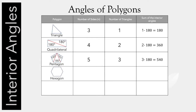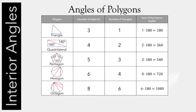Let's try a hexagon. A hexagon has six sides. And if we draw some diagonals, we'll find that we can split the hexagon into four triangles. Four times 180 gives us 720 degrees inside the hexagon. Let's try an octagon. An octagon has eight sides. If we draw some diagonals in the octagon, we can split that into six triangles. Six times 180 gives us 1080 degrees inside the octagon.